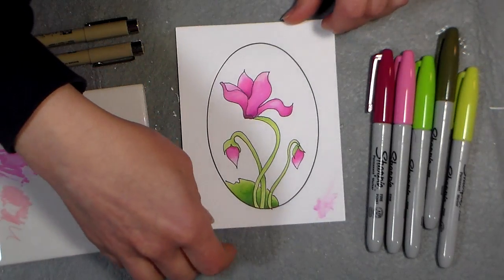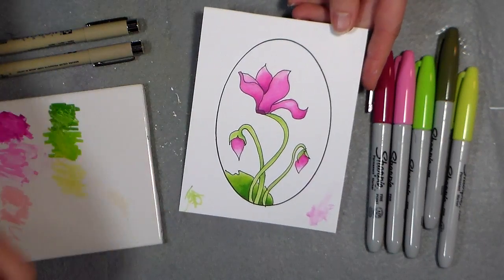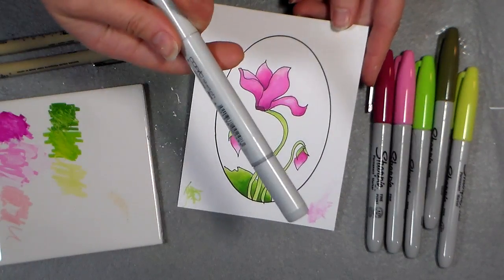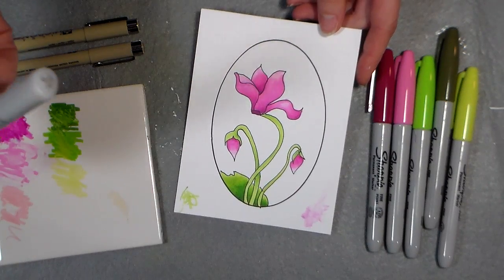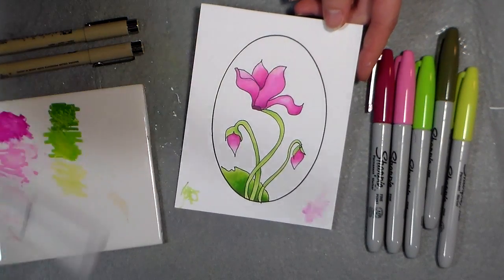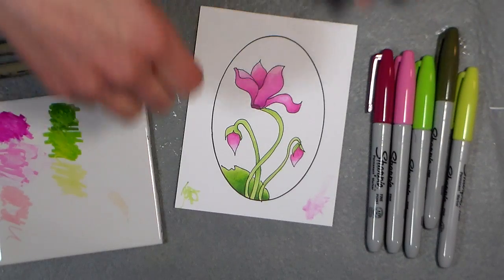Hi there, Lindsay here, The Frugal Crafter. Today I'm going to show you how to blend with your Sharpie markers and just a blending pen. You can use whatever alcohol blending pen you want. It's the same technique as how we blend with watercolor markers, but it works with this too. I'm also going to show you how to draw this cyclamen so that you can follow along with me.